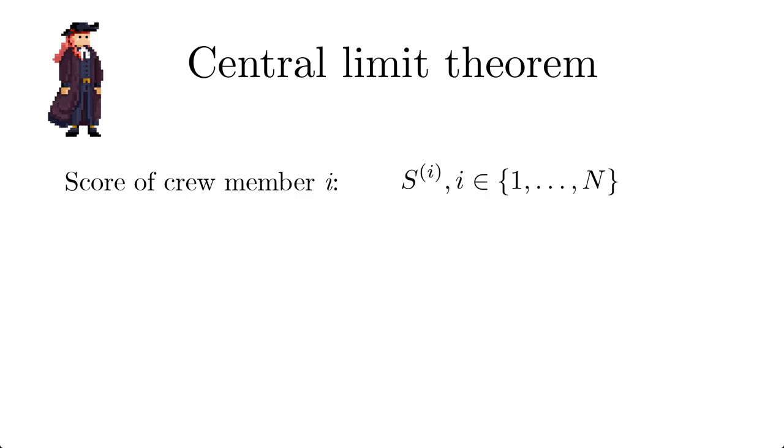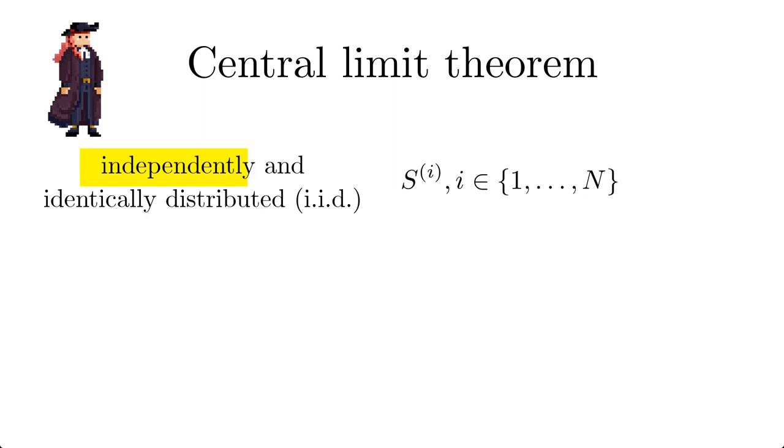The scores of the crew members are actually random variables. Let us be flexible as to the size of the crew and just denote it by n. The individual random variables have special properties. They are independently and identically distributed, which is abbreviated by IID. What does that mean? Well, identical means that all random variables have the same probability mass function, characterized by its mean and variance.